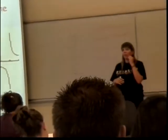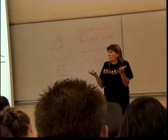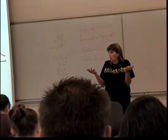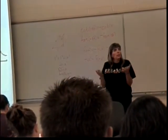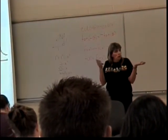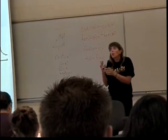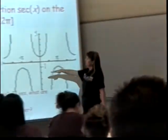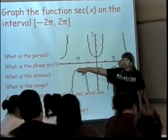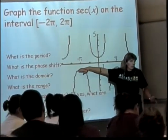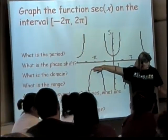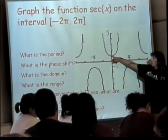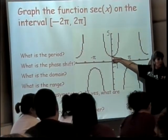If I take one and put it over one-half, what answer do I get? Two. I'm getting numbers that are bigger than one or less than negative one, with the exception of right here where one over negative one is negative one, and right over here where one over one is one.